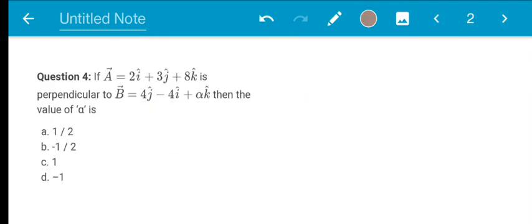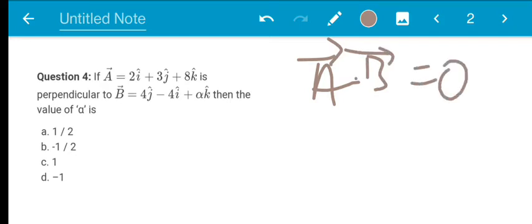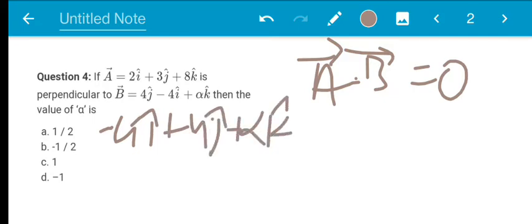First question: if A vector is equal to 2i cap plus 3j cap plus 8k cap is perpendicular to B vector is equal to 4j cap minus 4i cap plus alpha k cap, then the value of alpha is. This A vector is perpendicular to the other vector. So, A dot B is equal to 0. If you rearrange it, B vector is equal to the first j cap. Let's work in the rearranged: minus 4i cap plus 4j cap plus alpha k cap. This is dot product.